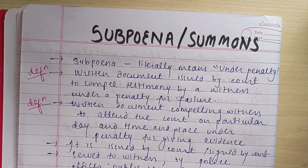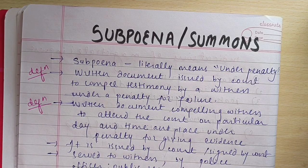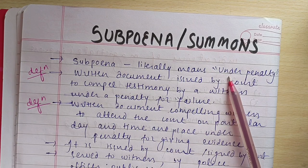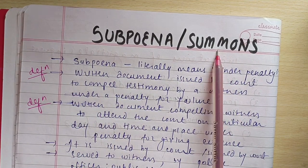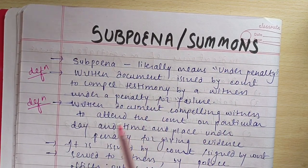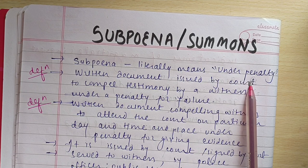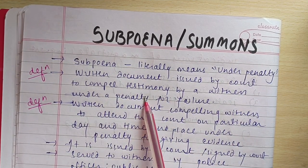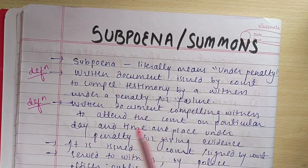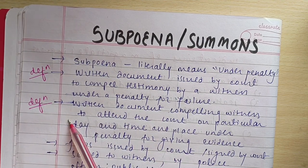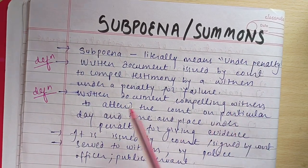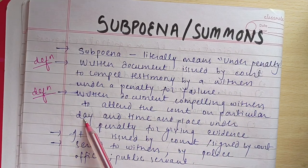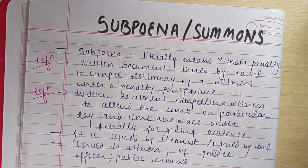In this video we are going to talk about subpoena or summons. Subpoena or summons literally means 'under penalty.' It is a written document issued by the court to compel the testimony of a witness under a penalty, compelling the witness to attend the court on a particular date, time, and place for giving any kind of evidence.